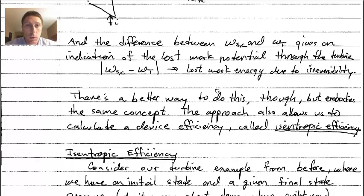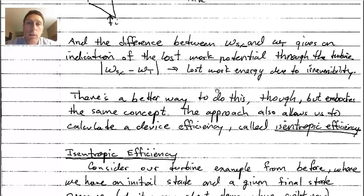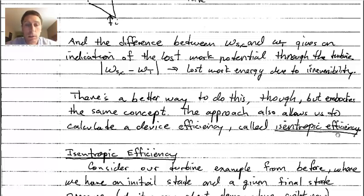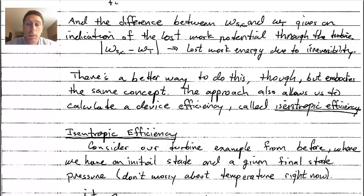A better approach is to treat the device of interest in both an actual sense and an ideal sense. When we do that, we can define what we call the device efficiency, also called the isentropic efficiency. The isentropic efficiency gives us an idea of how good a process is relative to the ideal process.